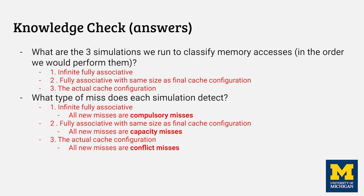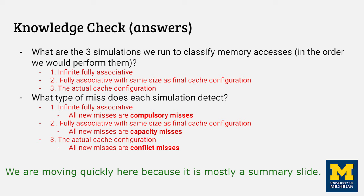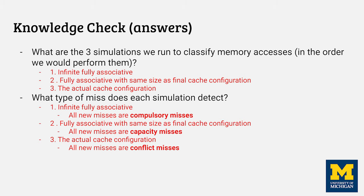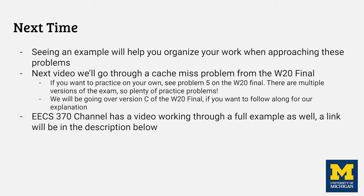Go ahead and try these problems. The three steps are listed there, and all of the different types of misses that we detect are listed below. It's helpful to see an example problem being worked out so you know how to organize your own work. In the next video, we'll go over problem five from the Winter 2020 final, specifically version C. If you want to see another example, the EECS370 channel has a video going through a full example, and there's a link to that in the description.